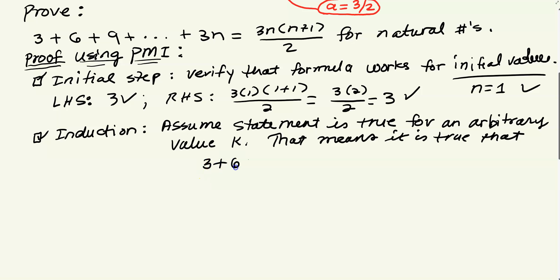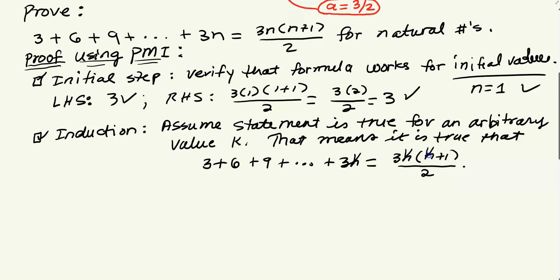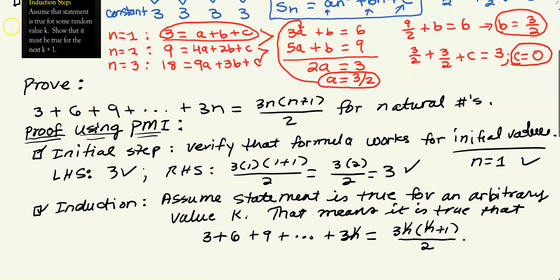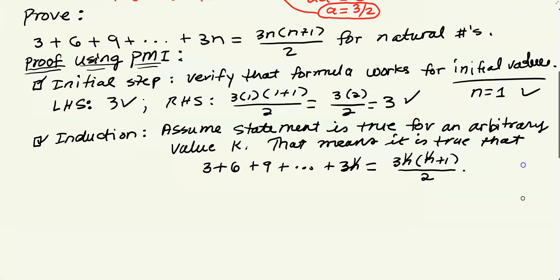Assuming it's true for k means: 3 + 6 + 9 + … + 3k = 3k(k+1)/2. We assume this is already true for some arbitrary k. Now, the induction process says: assume it's true for k, and we need to show that it's true for k + 1.